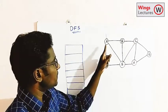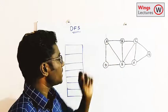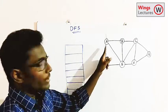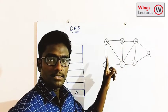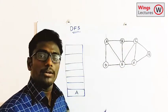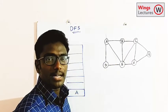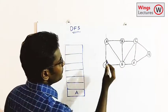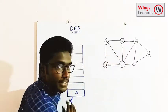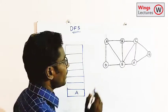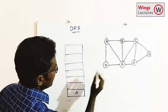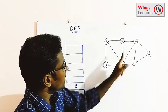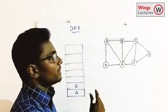Push A onto the stack and print it. Unlike BFS where we take all adjacent vertices, in DFS we take only one adjacent vertex at a time. From A the adjacent vertices are B, E, and D. I'm going to choose B, so push B onto the stack.